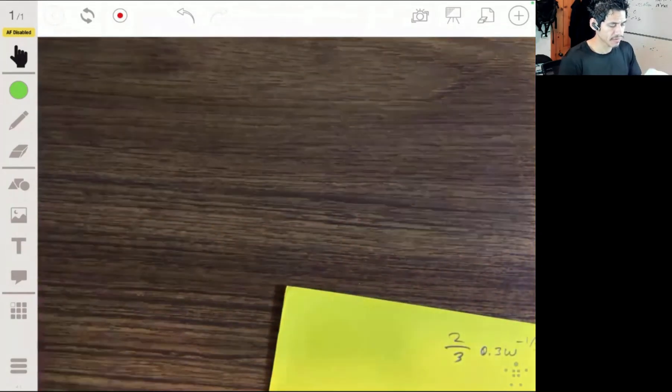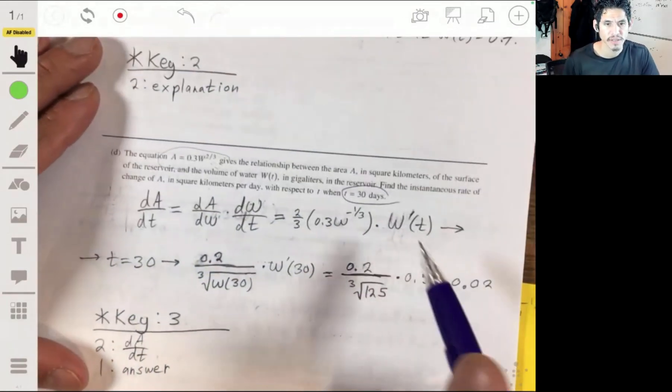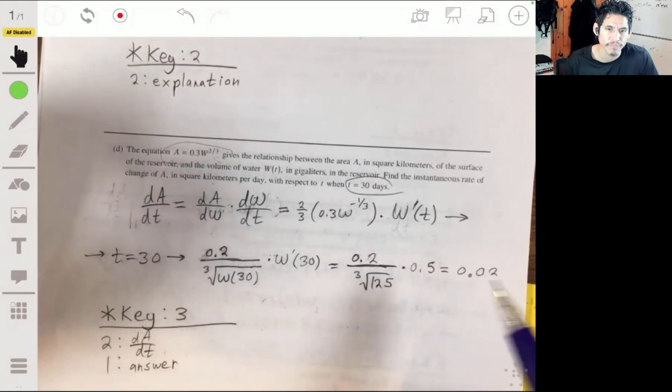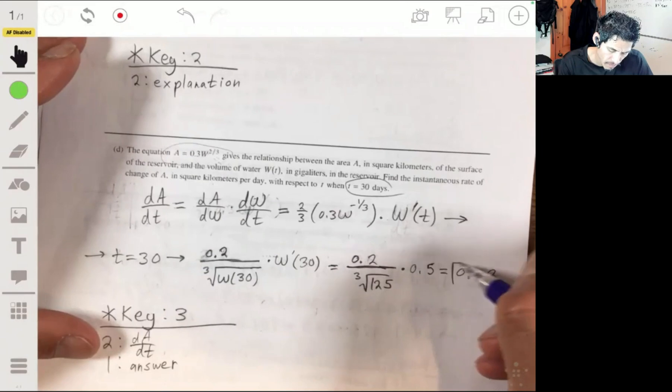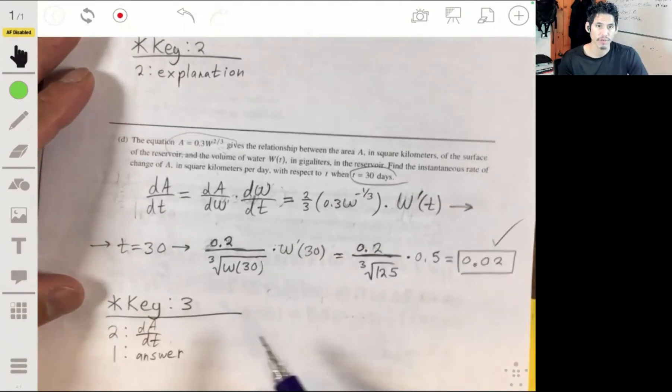And we just simplify it, and we end up getting 0.02. And there we go. And this is a three-point problem.